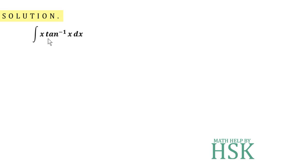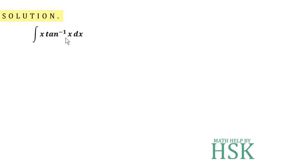To solve this, we need to identify which function is the first and which is the second. We observe that tan⁻¹(x) cannot be integrated directly — we do not know the direct integration of tan⁻¹(x). So we have no choice but to take tan⁻¹(x) as the first function.